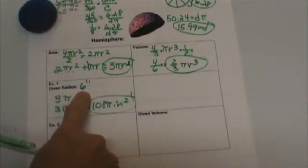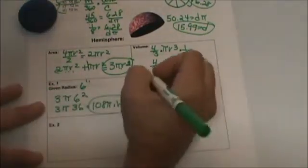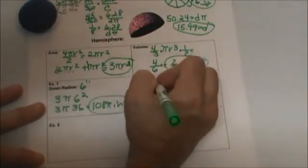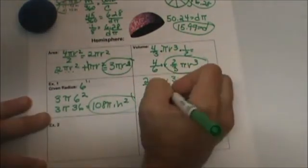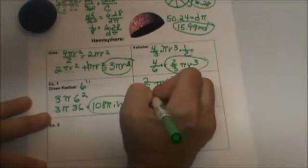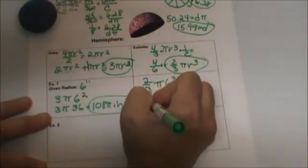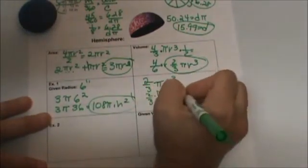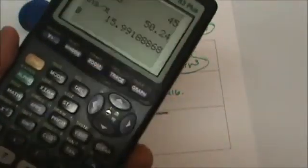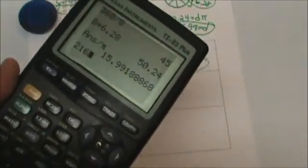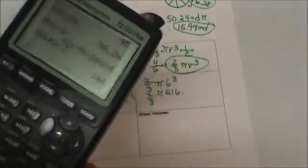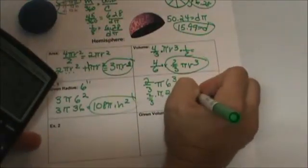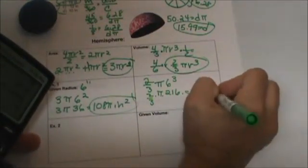Volume is very similar. You're just plugging into your 2 thirds formula. 2 thirds times pi radius which is 6 cubed. And 6 cubed a minute ago we said was 216. So 2 thirds times pi times 216. I don't know that off the top of my head so I'll grab a calculator. So times 2 divided by 3 is 144. So it's 144 pi and this would be inches cubed because we're talking about the volume.